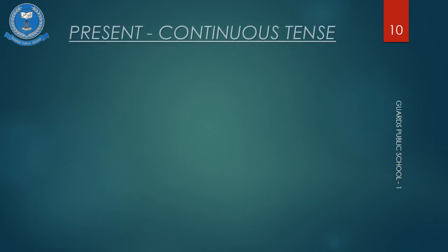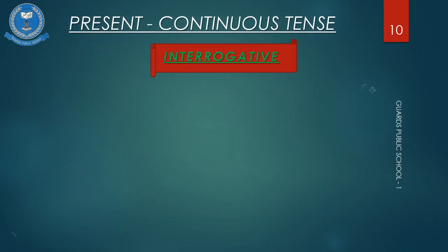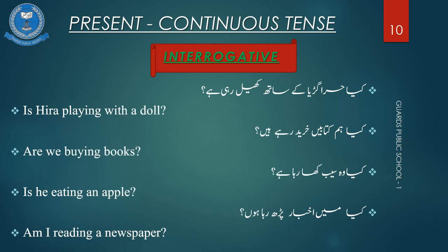Let's learn about interrogative sentences. An interrogative sentence asks a direct question and is punctuated at the end with a question mark. Now I will read the sentences. Kya Hira, Guriya ke saath kheel rahi hai? Is Hira playing with a doll?